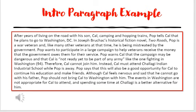Here's an example of an introduction paragraph. After years of living on the road with his son Cal, camping and hopping trains, Pop tells Cal that he plans to go to Washington DC. In Joseph Bruchock's historical fiction novel Two Roads, Pop is a war veteran and, like many other veterans at the time, he is being mistreated by the government. Pop wants to participate in a large campaign to help veterans receive the money that the government owes them for their service. Pop warns Cal that the campaign might be dangerous and that Cal is not yet ready to be part of any army like the one fighting in Washington.